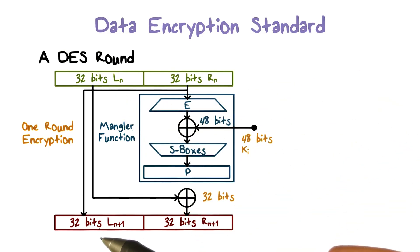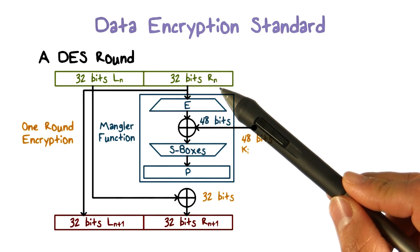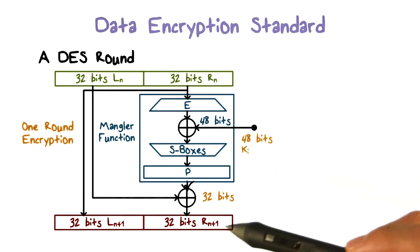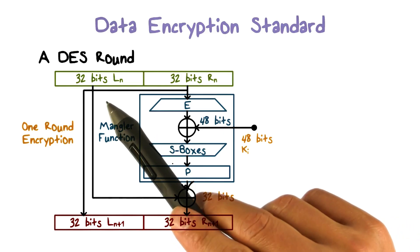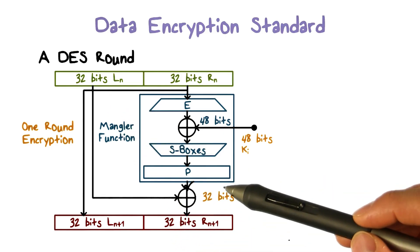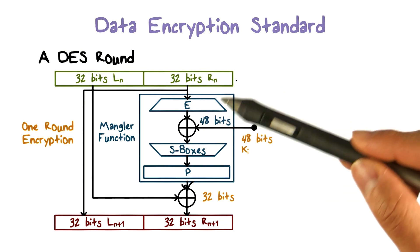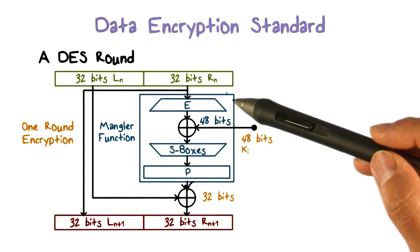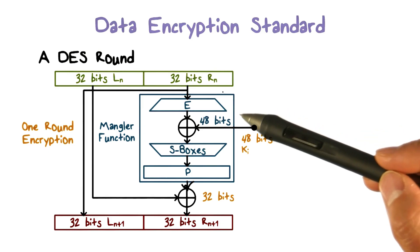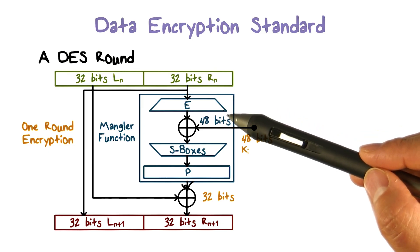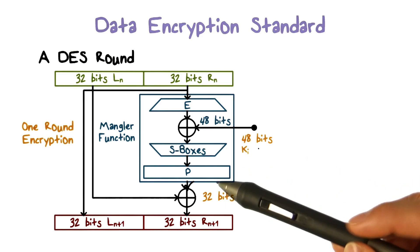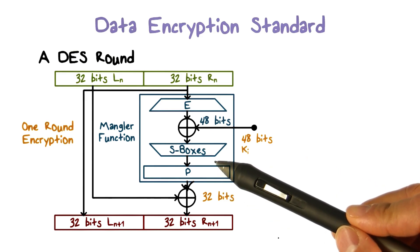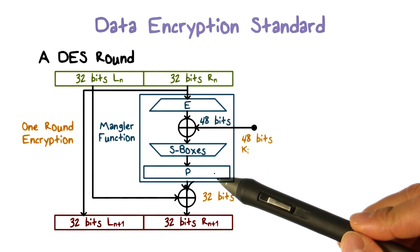The output left half is just the right half of the input. The right half of the output is the result of XORing the left half of the input and the output of the Mangler function. The Mangler function takes as input the 32-bit input right half, expands it to 48-bit, then XORs it with the 48-bit per-round key, then uses the S-boxes to substitute the 48-bit value into a 32-bit value.